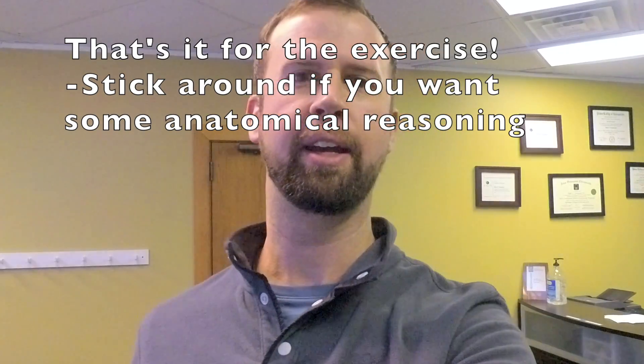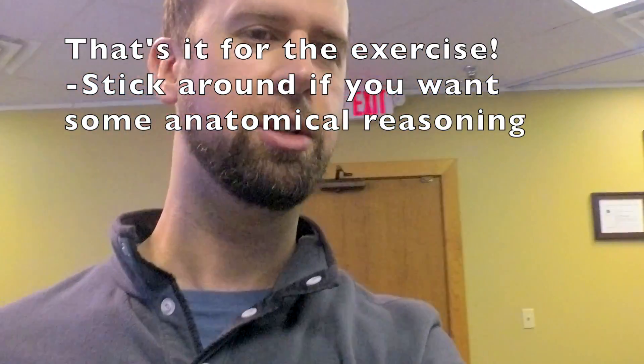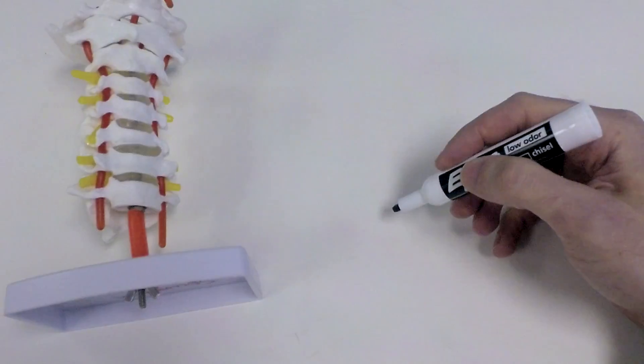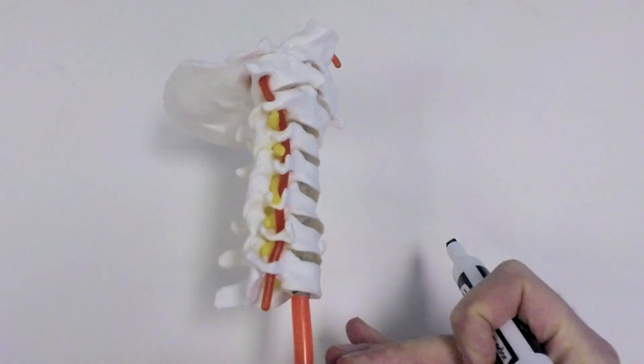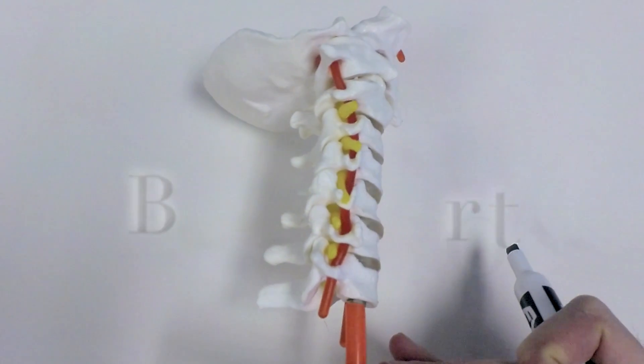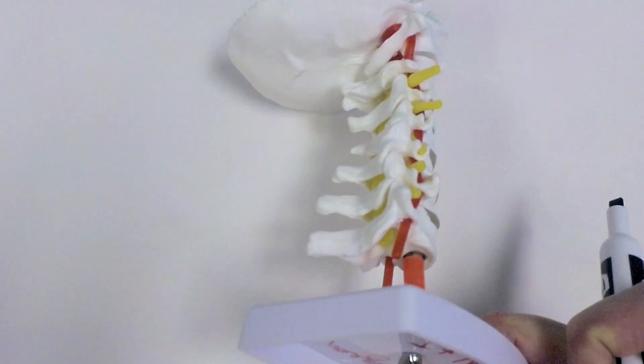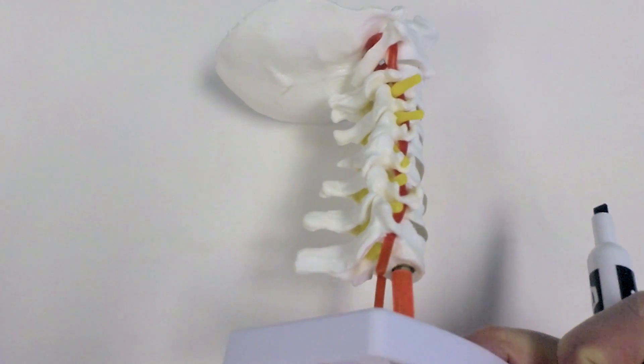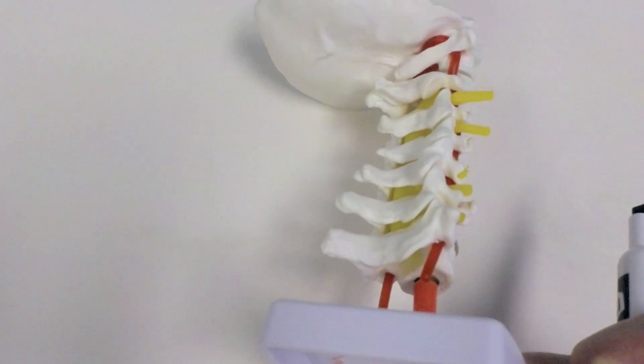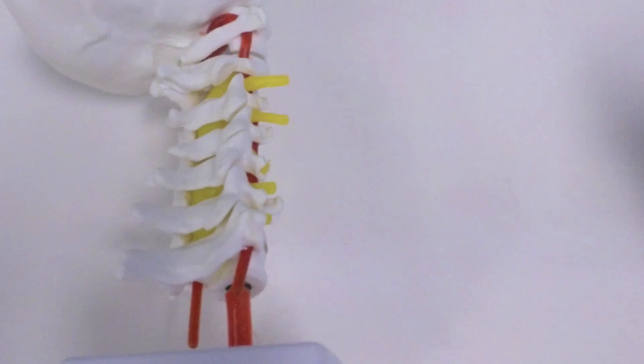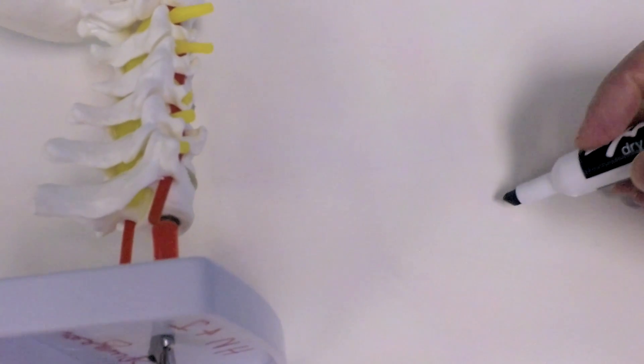Now that you get that, let's talk a little bit about why. I'm going to try to do a little drawing. So this is our neck, right side view, front side, back side on the left there. Ideally we're having a curvature that is roughly like that.